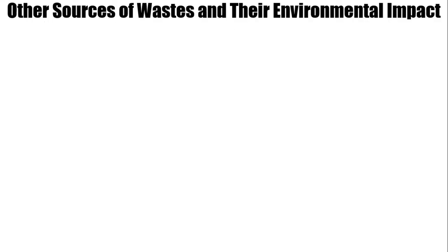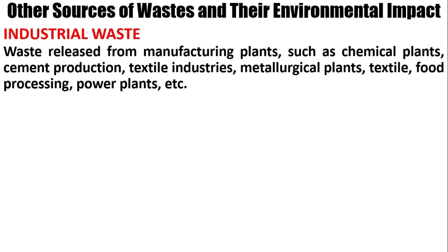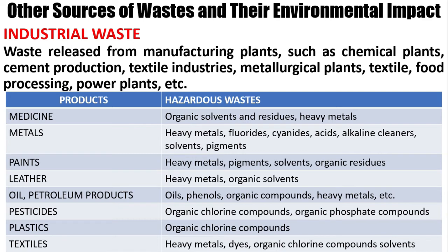Now let's discuss other sources of waste and their environmental impact. The first is industrial waste — wastes released from manufacturing plants such as chemical plants, cement production, textile industries, metallurgical plants, and food processing. A table shows the different products under industrial waste and their associated hazardous wastes: for medicine, organic solvents and heavy metals; for metals, fluorides and cyanides; for paints, pigments and solvents; for leather, organic solvents and heavy metals.